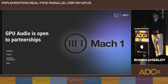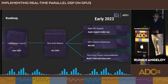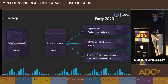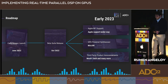We're open to working with any company willing to integrate their products with our solution. Our early access launched back in June; the beta modulation suite was released last month. Apple M1 support is planned for this winter, along with the GPU-powered synthesizer, and in 2023 we expect to release multiple partner collaborations including Mach1.